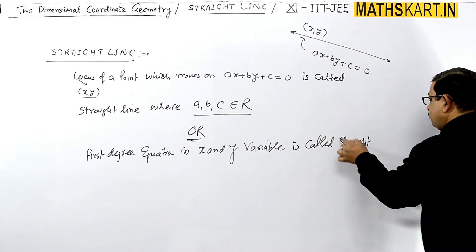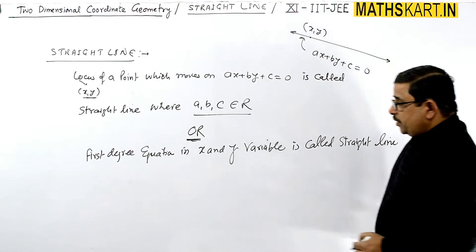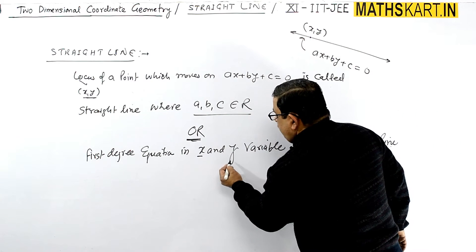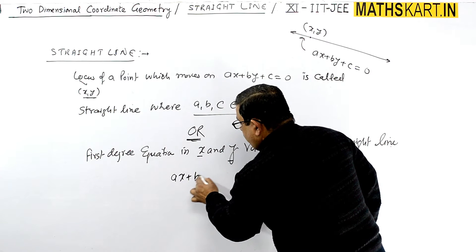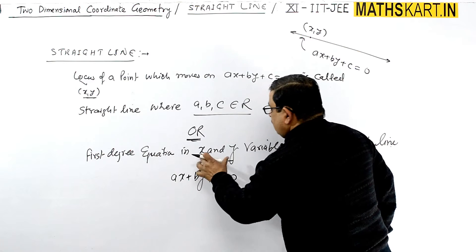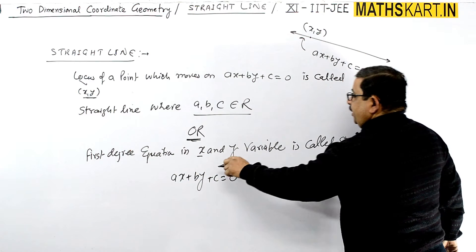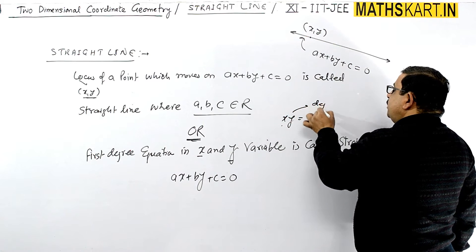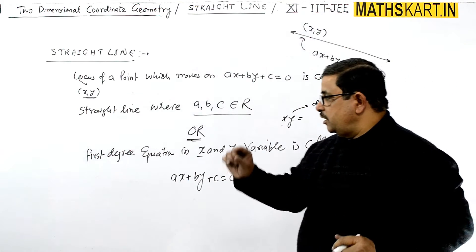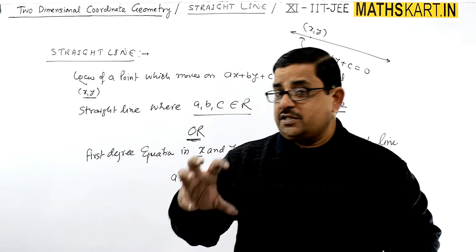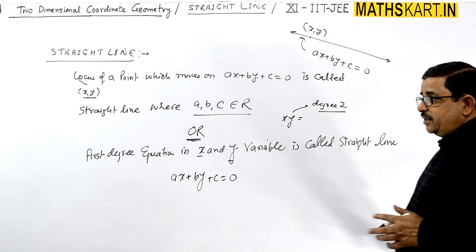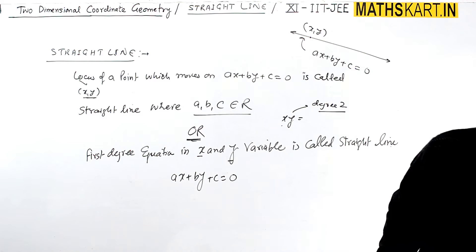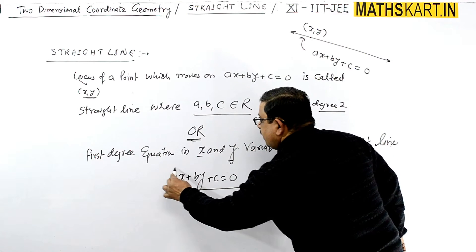This second definition is saying the same thing but differently — that it should be a first degree equation. First degree means x or y appears to the power 1, like ax + by + c. If you multiply, the degree becomes 2 and it is no longer a first degree equation. First degree equations are also called linear equations, and that is known as the straight line.